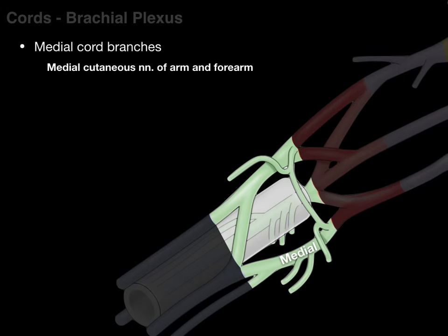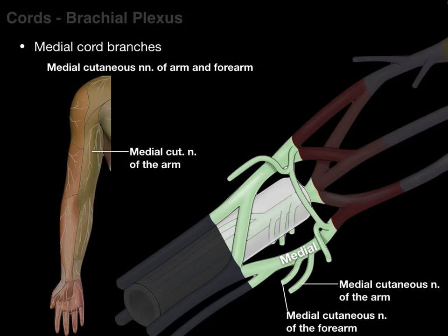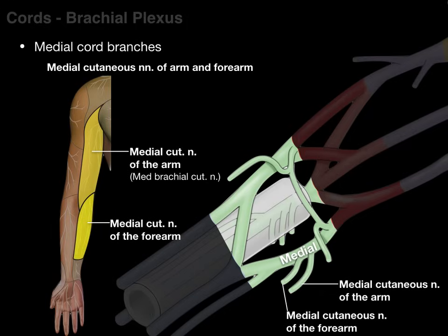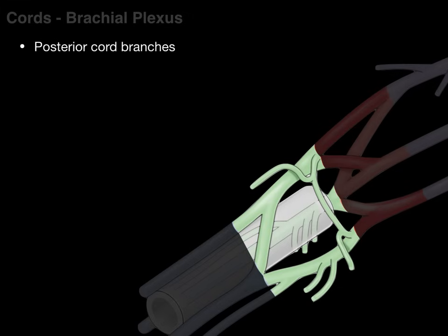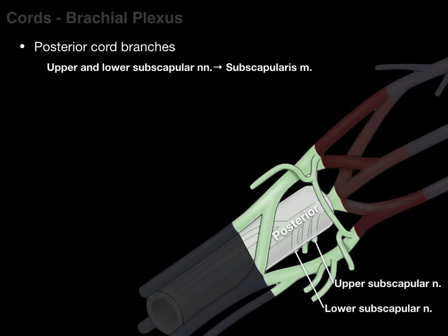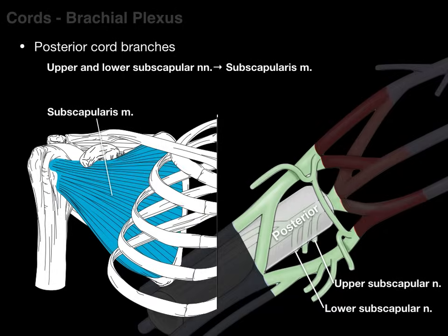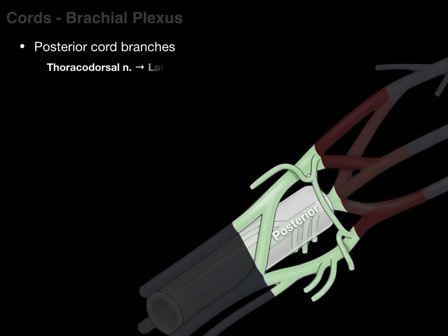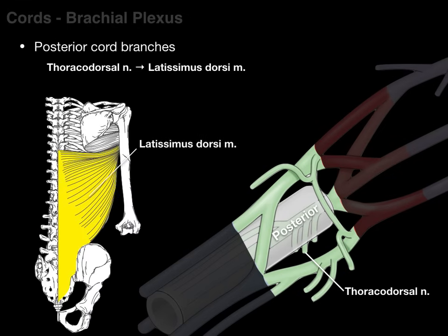Other medial cord branches include the medial cutaneous nerves of the arm and forearm — the medial cutaneous nerve of the arm providing sensation to that region (also called the medial brachial cutaneous nerve), and the medial cutaneous nerve of the forearm (also called medial anti-brachial cutaneous nerve). For the posterior cord: there are three branches — the upper and lower subscapular nerves innervating the subscapularis muscle, one of our rotator cuff muscles, and the thoracodorsal nerve (also called the middle subscapular nerve), which innervates our latissimus dorsi muscle.